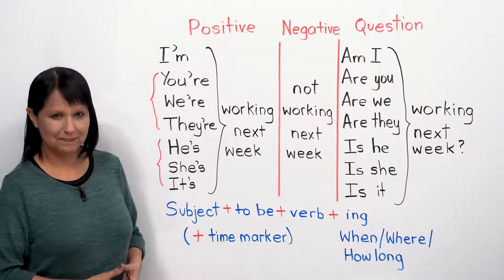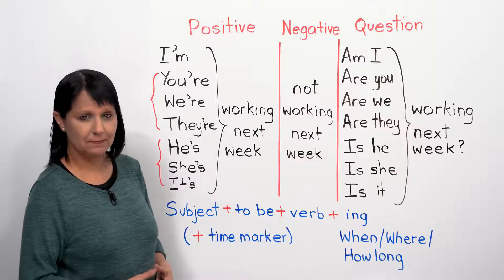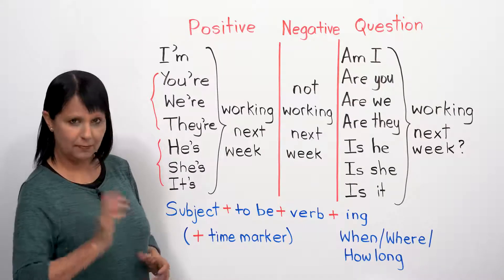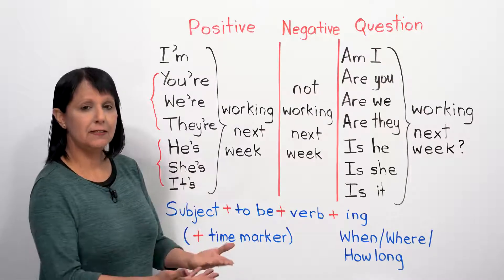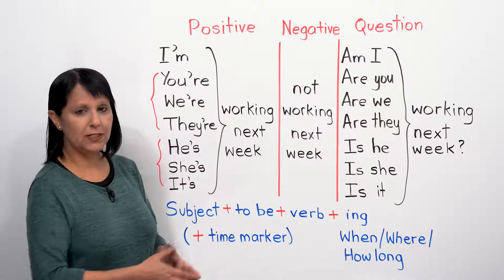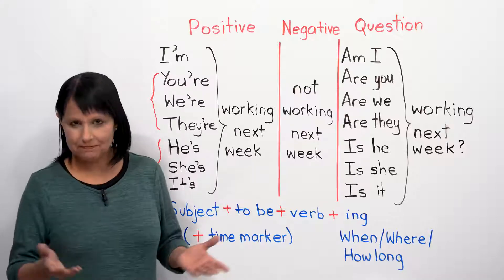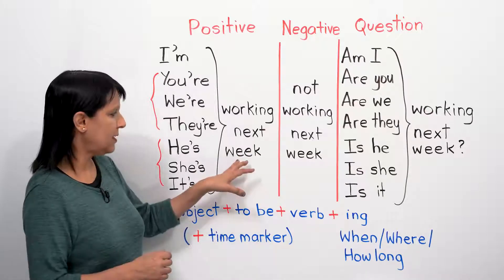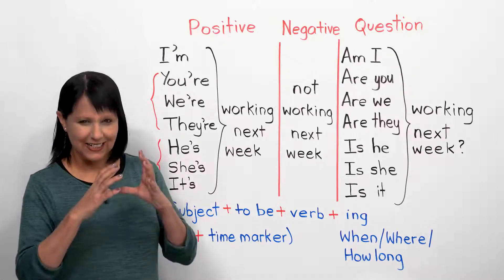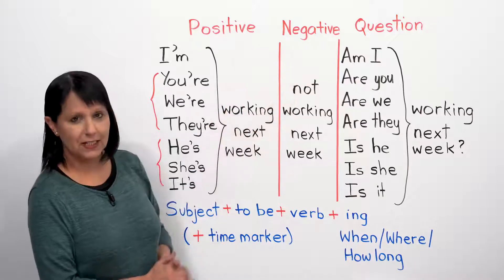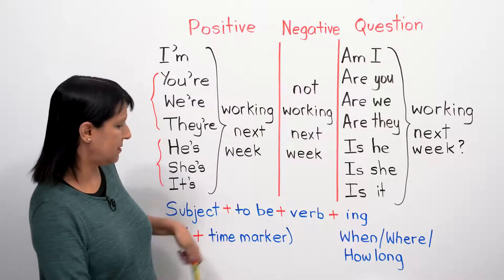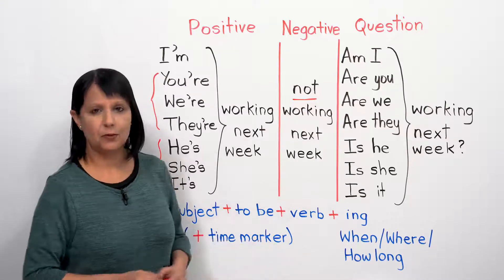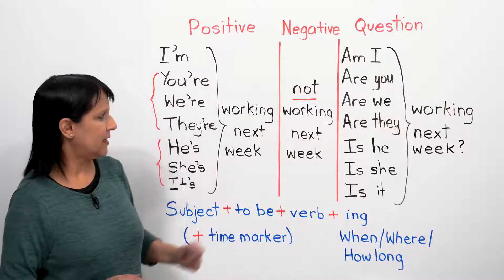With 'is': 'he's working next week,' 'she's working next week,' 'it's working next week.' It doesn't have to be 'next week' - it can be any time marker. For negative sentences, we just add 'not': 'I'm not working next week,' 'he's not working next week,' 'they're not working next week.'